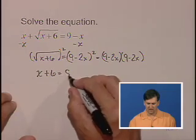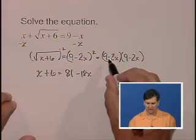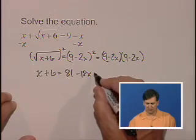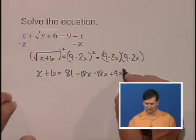9 times 9 is 81. 9 times minus 2x is minus 18x. Minus 2x times 9 is minus 18x. And minus 2x times minus 2x is plus 4x squared.